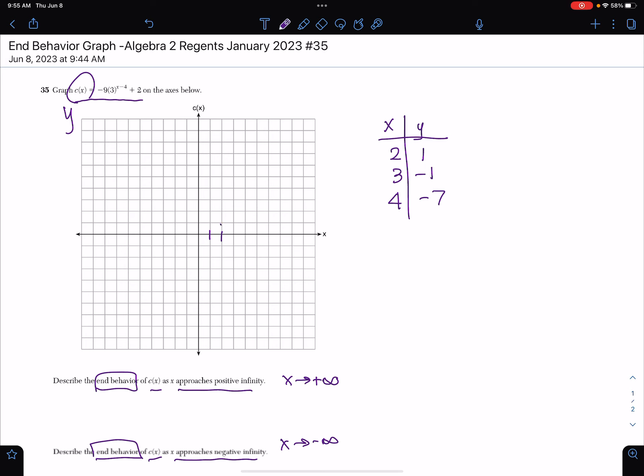So 1, 2, 1. Then 1, 2, 3, negative 1. Then 1, 2, 3, 4, and negative 1, negative 2, negative 3, negative 4, negative 5, negative 6, negative 7. And remember, it was a curve, so I'm going to make it curved.